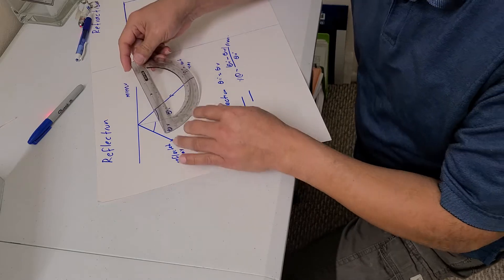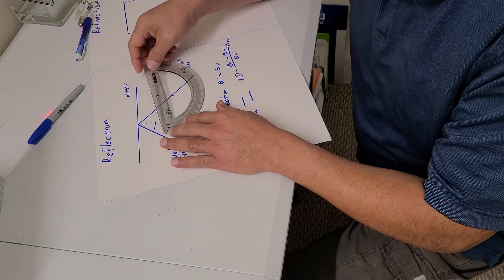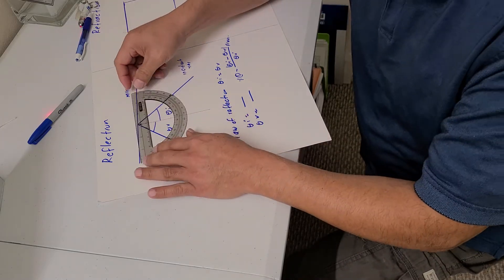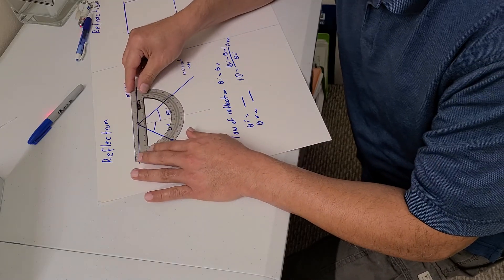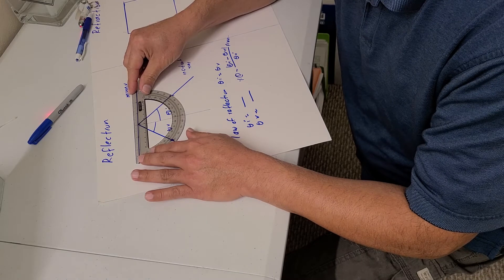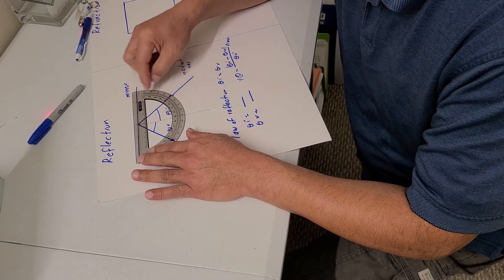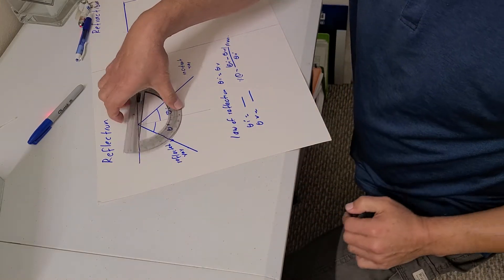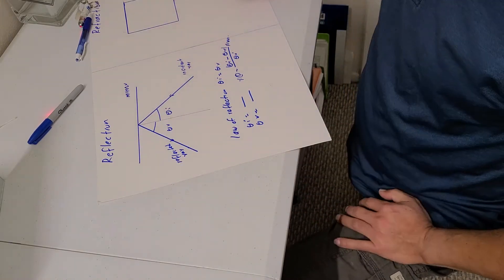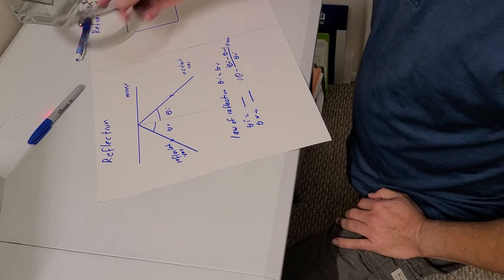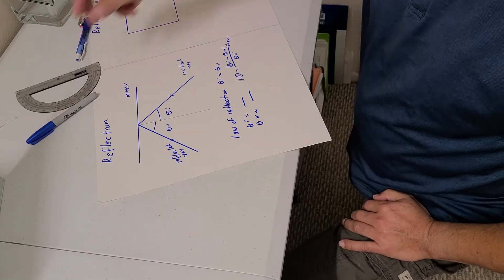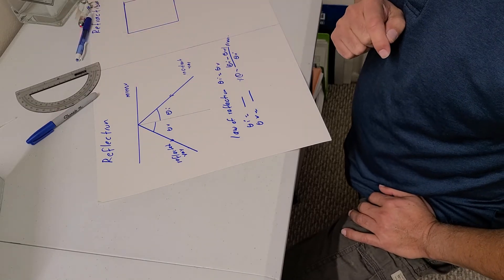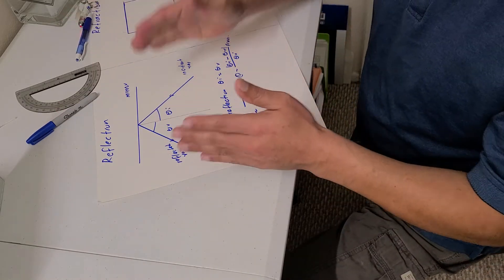To find the angle, let's use the protractor. Hopefully you have a protractor at home. Find the angle with respect to the normal for this one and for the other one, then compare the two using the percent error. That's going to be for reflection.